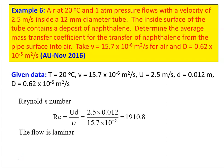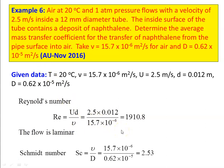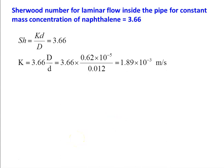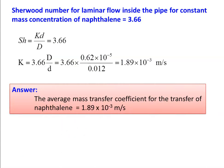Reynolds number for pipe flow: Re = ud/ν = 2.5 × 0.012 / (15.7 × 10⁻⁶) = 1910.8 — flow is laminar (Re < 2300). Schmidt number Sc = ν/D = 15.7 × 10⁻⁶ / (0.62 × 10⁻⁵) = 2.53. For laminar flow inside a pipe with constant wall concentration of naphthalene: Sh = 3.66. Therefore k = 3.66 × D/d = 3.66 × (0.62 × 10⁻⁵) / 0.012 = 1.89 × 10⁻³ m/s. The average mass transfer coefficient for naphthalene is 1.89 × 10⁻³ m/s.